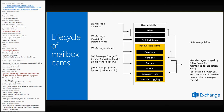For single item recovery and in-place hold: if items expire — say the deleted item retention time is 30 days — if the item is tagged for a discovery set, we'll move it from deletions, purges, or versions down to the discovery hold area. Every so often, the managed folder assistant will come around and process the mailbox. Any item eligible for purging will be removed. If the item is not eligible or is still part of a discovery set, it will not be deleted from the mailbox.